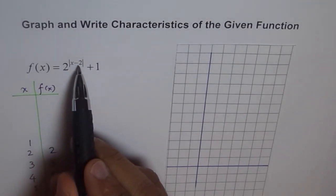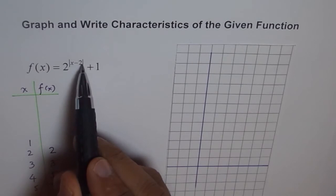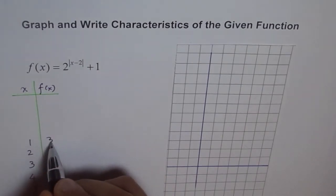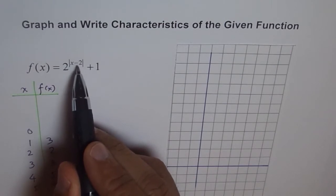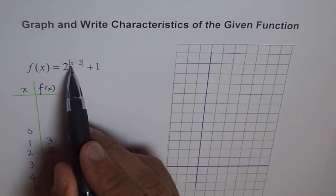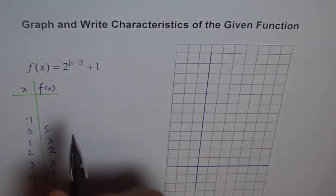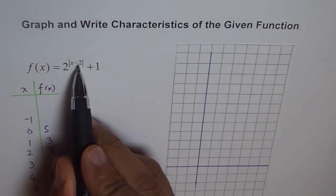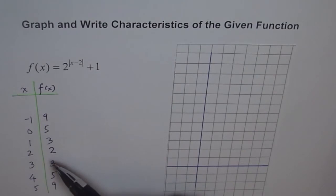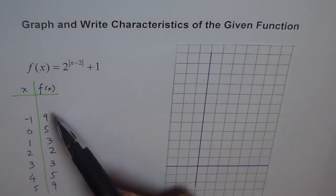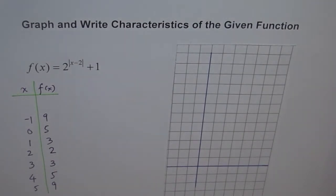Now going the other direction: if x is 1, then 1 minus 2 is negative 1, but the absolute value of negative 1 is 1, so we again get 2 to the power of 1 plus 1, which is 3. If x is 0, then the absolute value of (0 minus 2) is 2, so 2 squared plus 1 is 5. If x is negative 1, then the absolute value of (negative 1 minus 2) is 3, so 2 cubed plus 1 is 9. We see symmetry: 2, 3, 5, 9 on both sides, and x equals 2 is the line of symmetry.